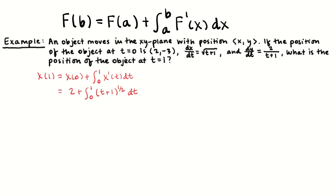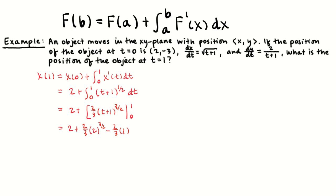I'm going to actually do this integration. So 2 plus an antiderivative — check your antiderivative real quick, yeah, that's going to work. Then plug in top and bottom and subtract. That gives us 2 plus 2/3 of 2 to the 3/2 minus 2/3 of 1 to the 3/2, which is just 1. That's how we find x(1) — a number equivalent to the position of the object at t equals 1.